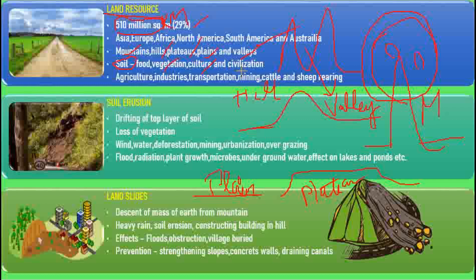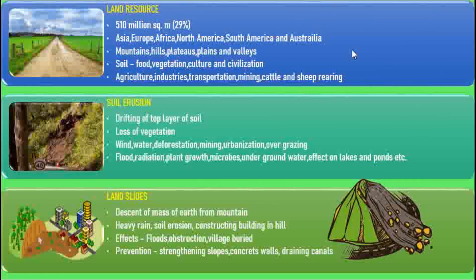Soil also supported civilization — for example, the Indus Valley civilization. Land is important for agriculture, industries, transportation, mining, and cattle and sheep rearing. In terms of land area distribution, 25% is mountain, 45% is plain, and 30% is plateau.